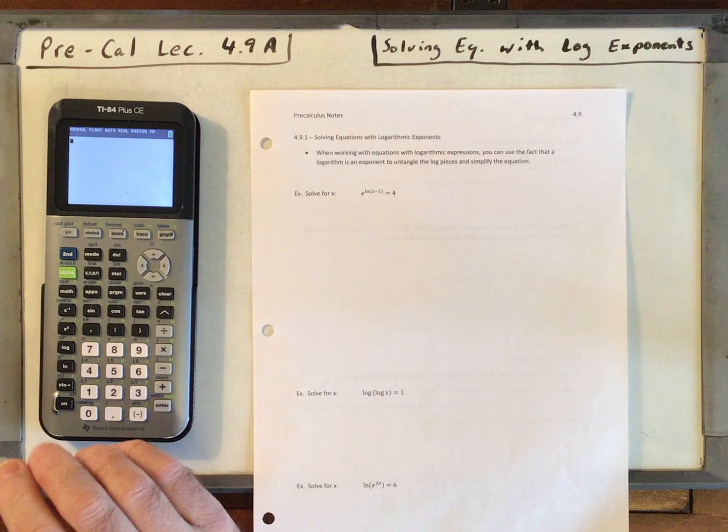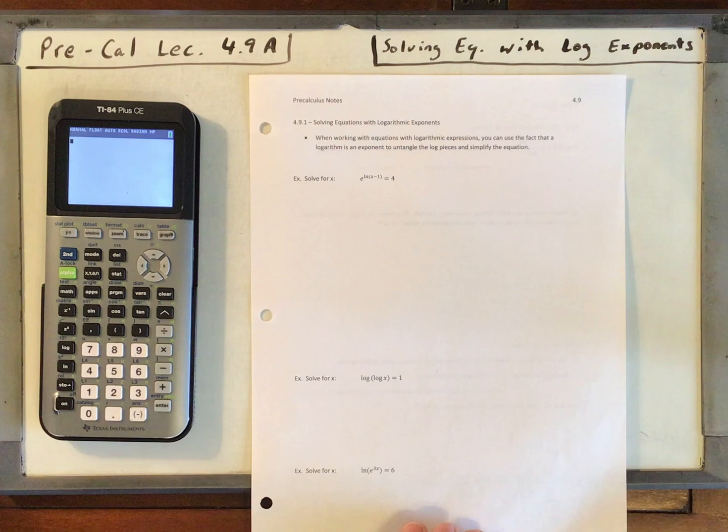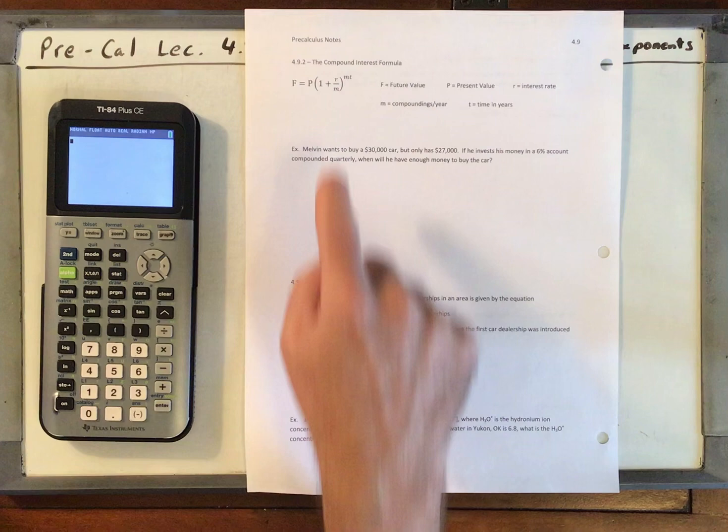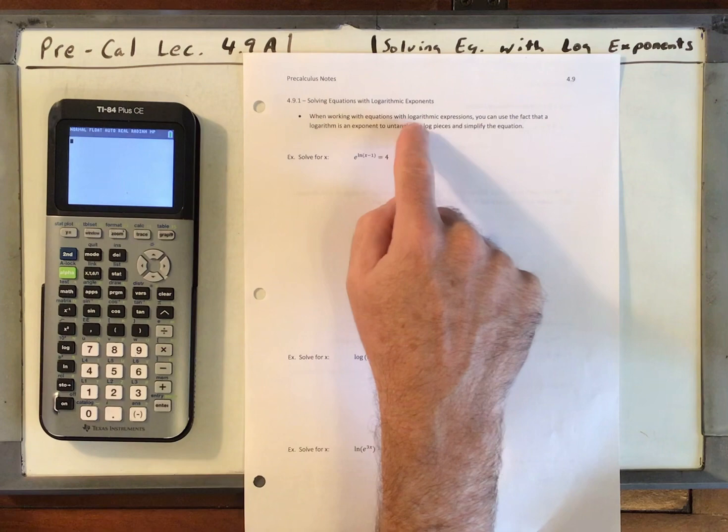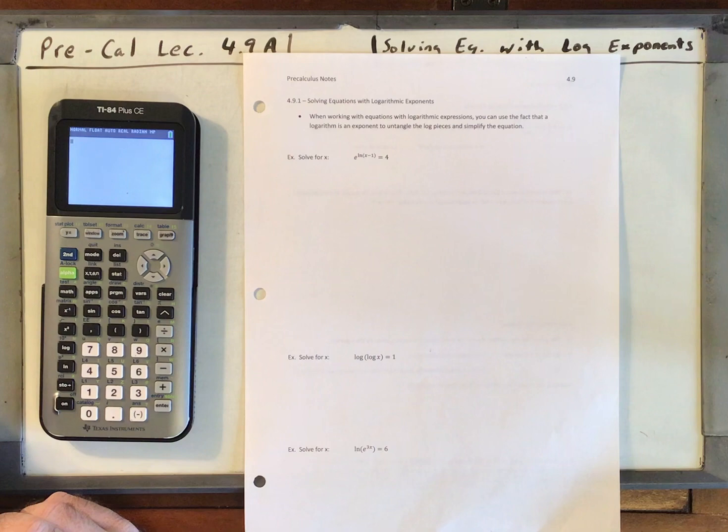So you will need your 4.9 notes. We're going to do the front page, and then go through 4.9.2 and stop in the middle of page 2. When working with equations with logarithmic expressions, you can use the fact that a logarithm is an exponent to untangle the log pieces and simplify the equation. Let's do our first example.